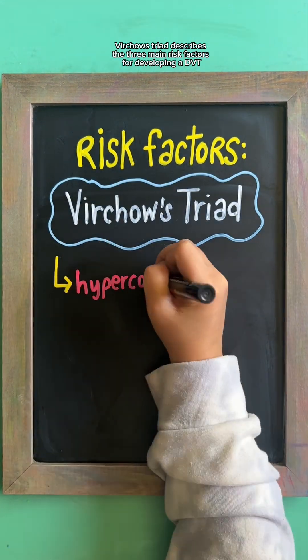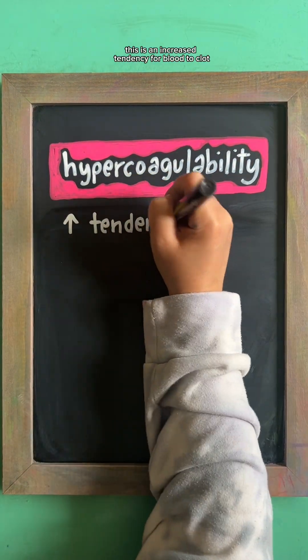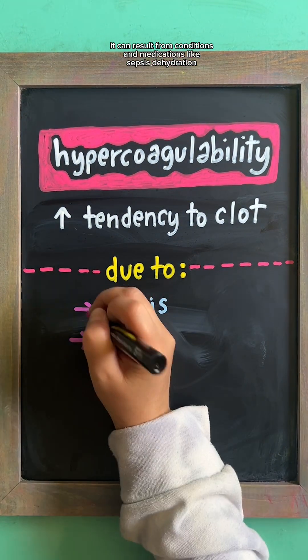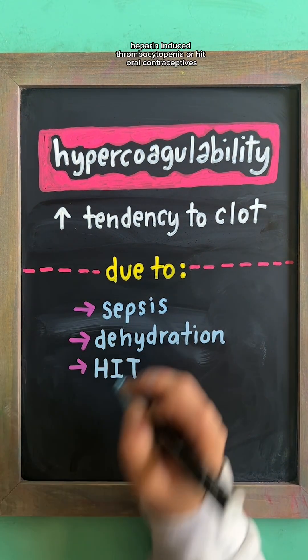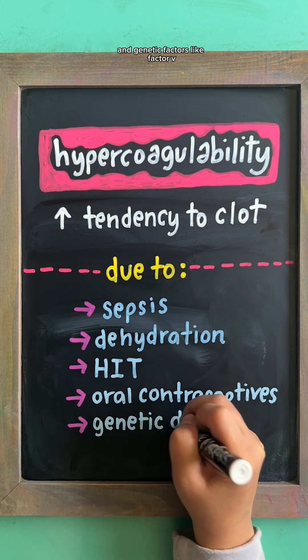Virchow's triad describes the three main risk factors for developing a DVT. First, hypercoagulability. This is an increased tendency for blood to clot. It can result from conditions and medications like sepsis, dehydration, heparin-induced thrombocytopenia or HIT, oral contraceptives, and genetic factors like Factor V Leiden.